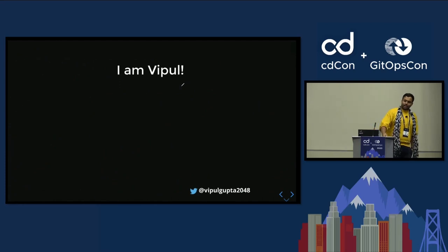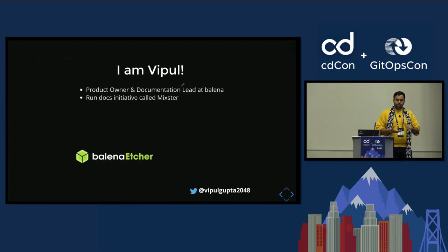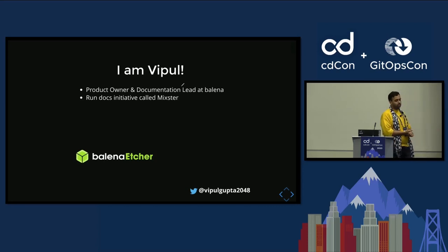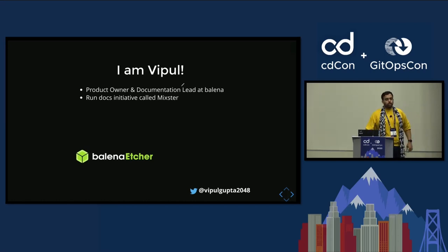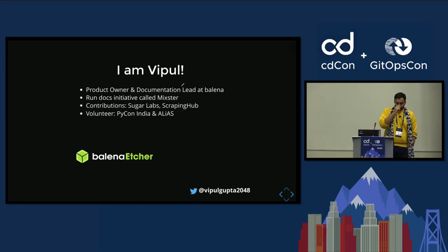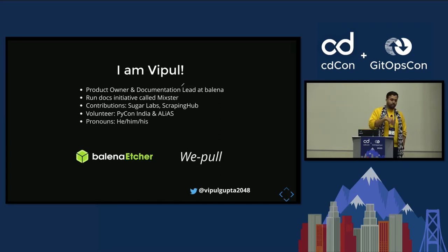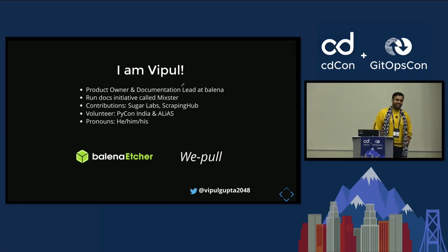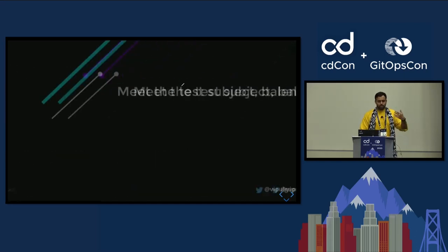I'm Vipul, and I work for a company called Balena. You might have heard of Balena from a product called Balena Etcher. I'm a product owner there, and I also lead documentation. I run the documentation initiative to write documentation for open source startup projects. I do quite a bit of open source work and volunteering in PyCon India. My pronouns are he/him, and my name is pronounced Vipul.